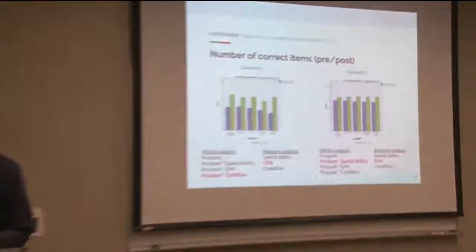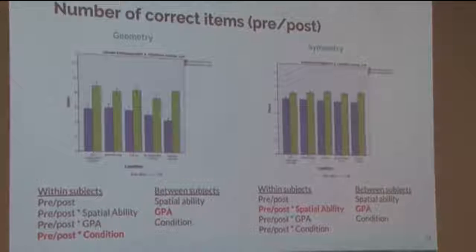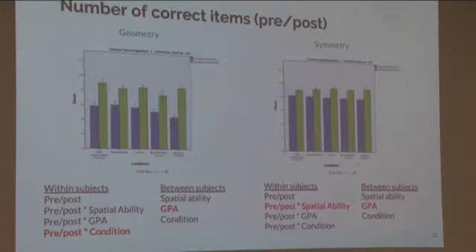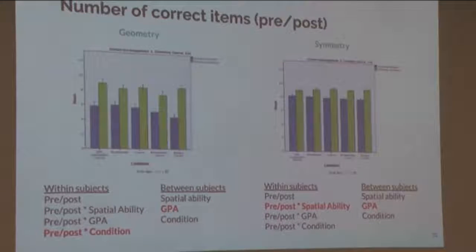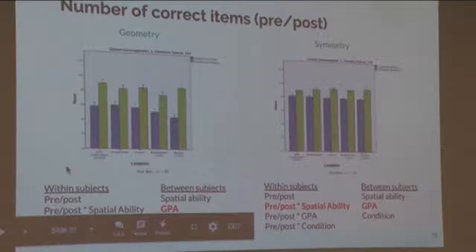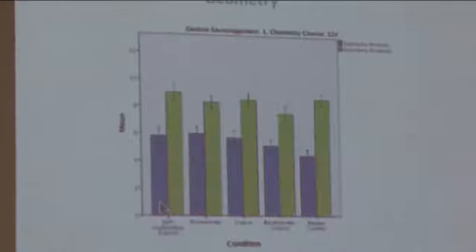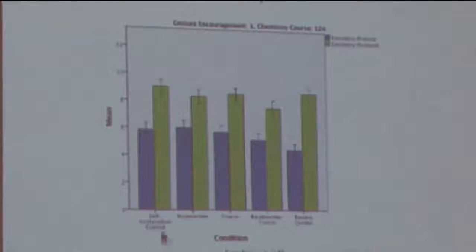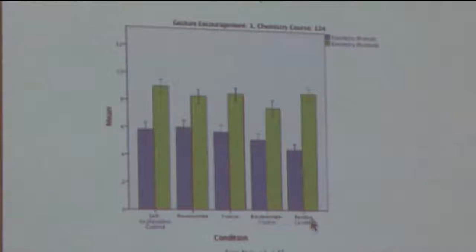I predicted that participants in the embodied conditions — representers, enactors, and representer-enactors — should outperform both control groups, and that the representer-enactors should gain the most from the dual reinforcement of two gesture types. I ran a repeated-measures ANOVA controlling for spatial ability and GPA, using both the geometry and symmetry subscales as the repeated measure and treatment as the between-subjects variable. Each bar chart shows mean spatial thinking scores for pretest in blue and posttest in green, across the five conditions: self-explanation, representers, enactors, representer-enactors, and passive control.